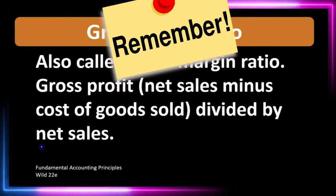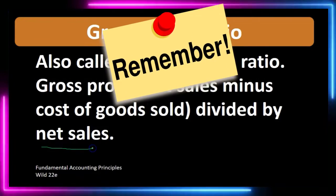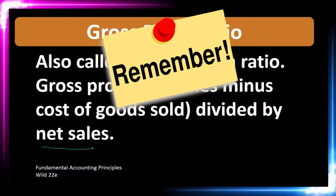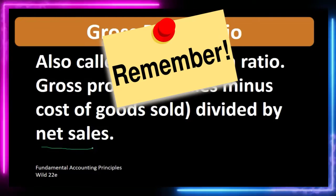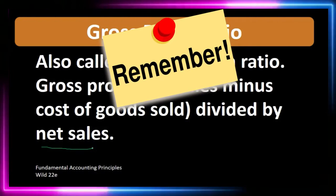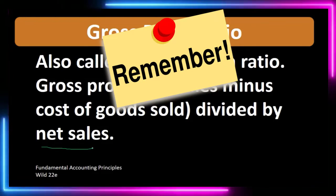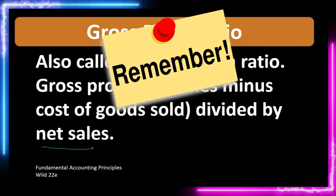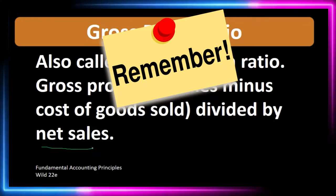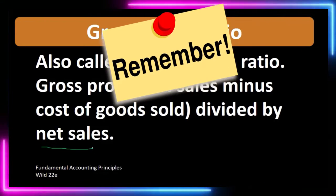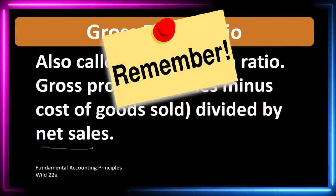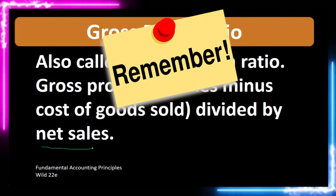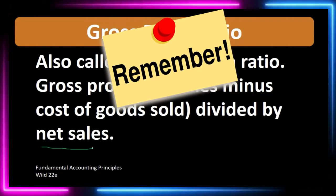Remember that the term 'net sales' does not mean net income. We're really just talking about the sales number in a multi-step income statement — the net sales number, which is sales minus the contra sales accounts: sales returns and allowances, and discounts.